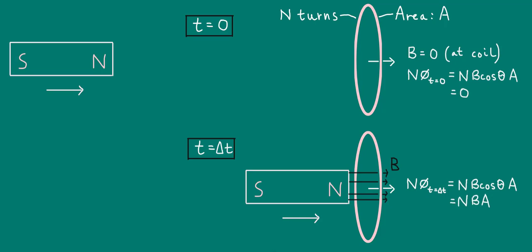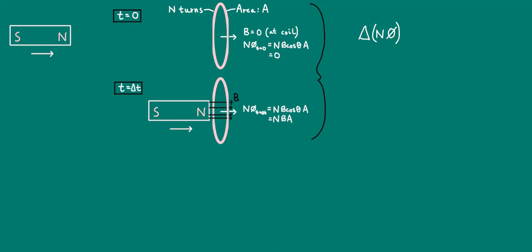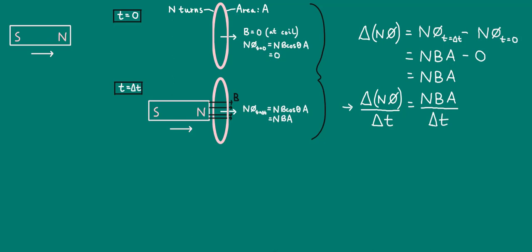From this, we can get an expression for the change in magnetic flux linkage as the magnet moves towards the coil. This is just the final flux linkage minus the initial flux linkage, which equals NBA. If we divide by Δt, the time taken for the change, we get an expression for the rate of change of flux linkage.